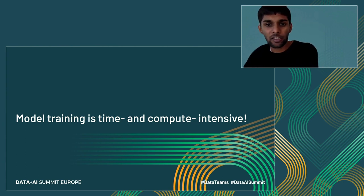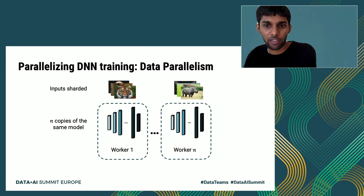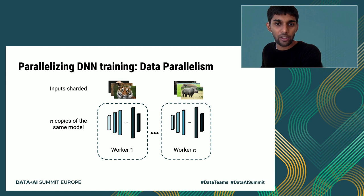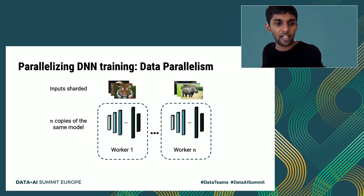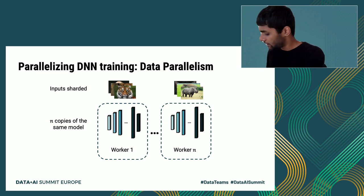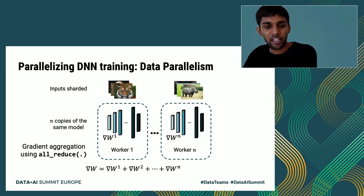In order to obtain trained models in reasonable time frames, people have resorted to distributing the training of a model. The common approach is data parallelism, where a model is replicated across the available workers. Inputs are sharded, weight updates are first computed independently, and then aggregated using collective communication primitives such as all-reduce.